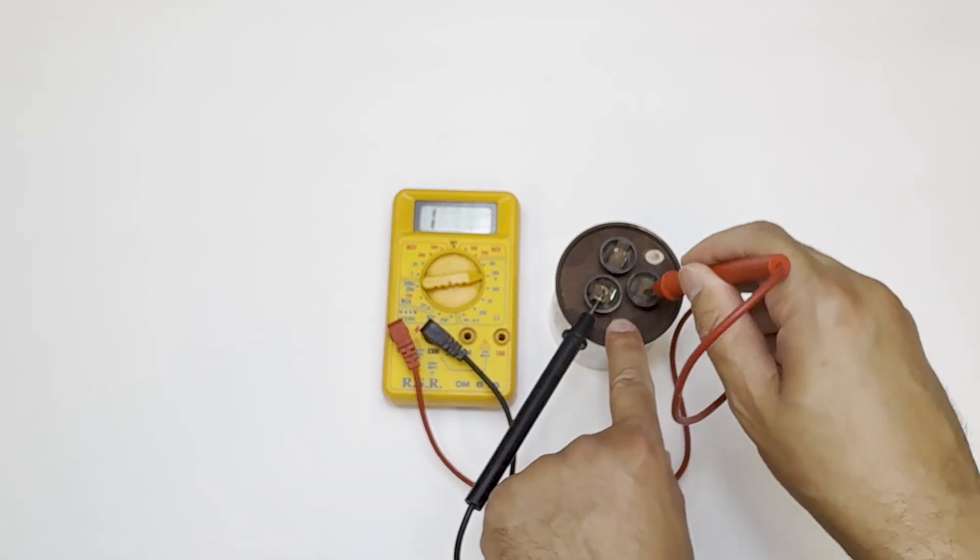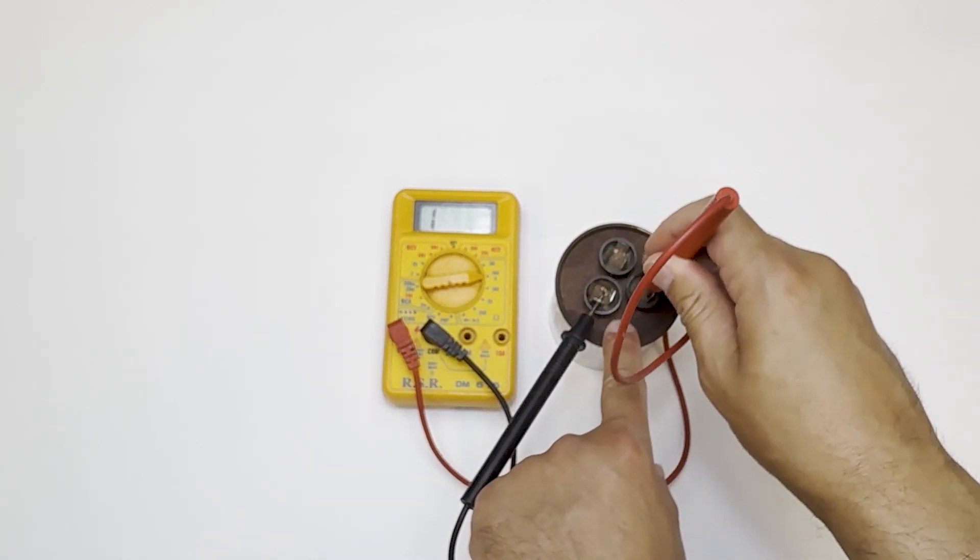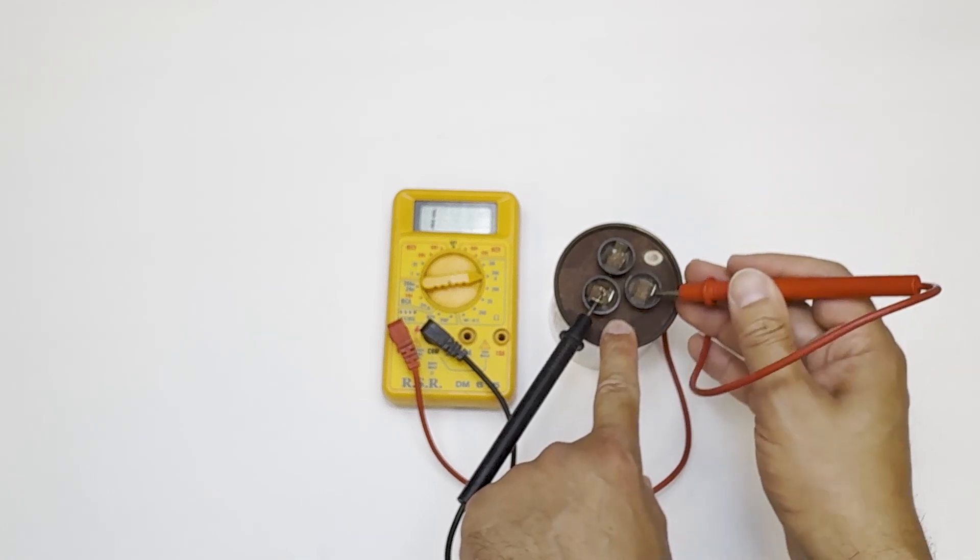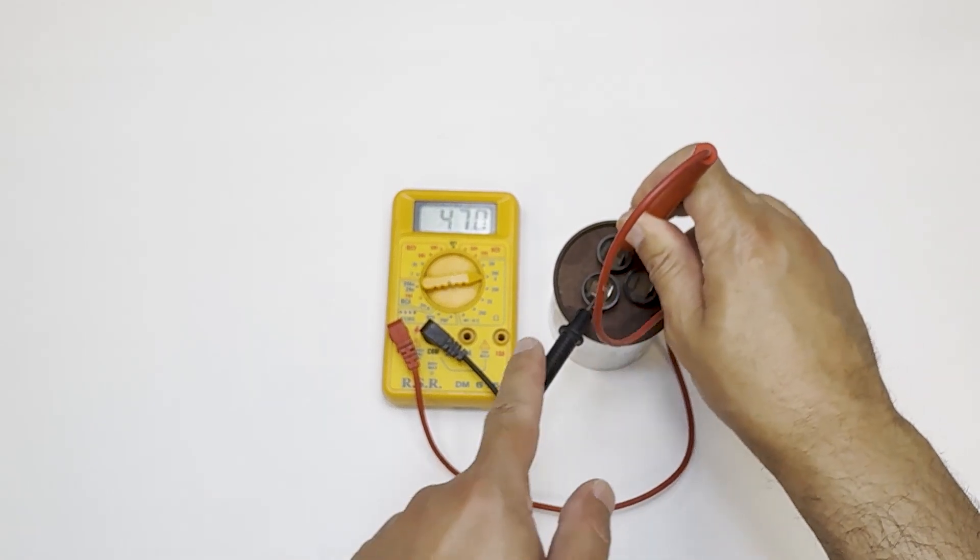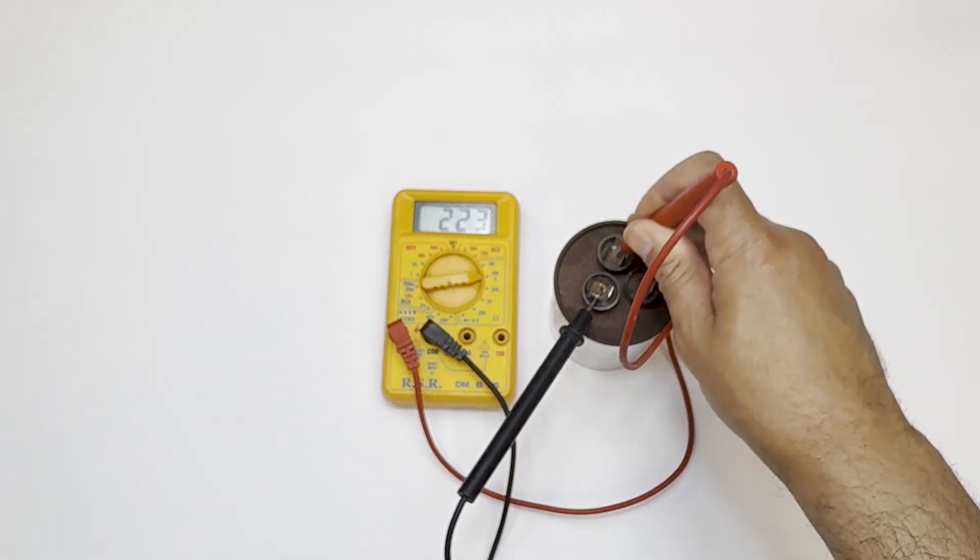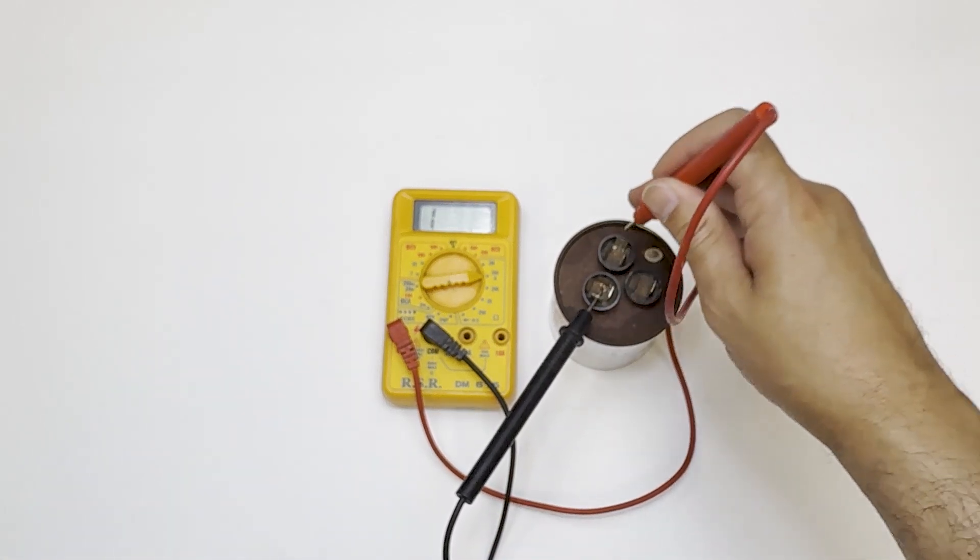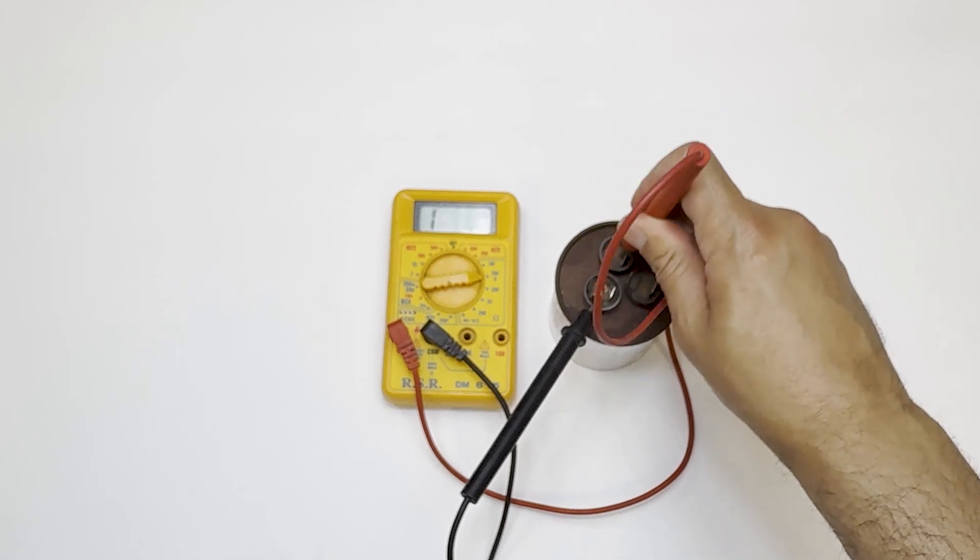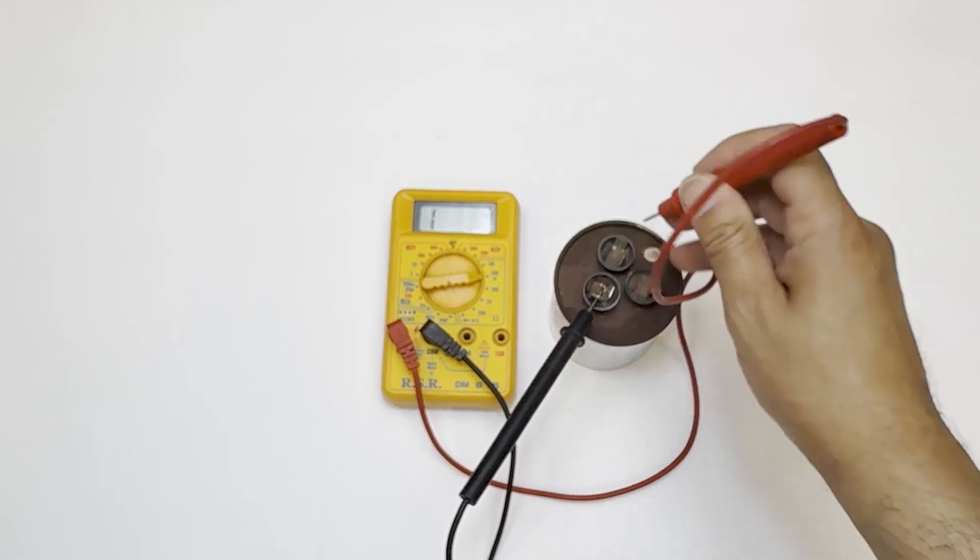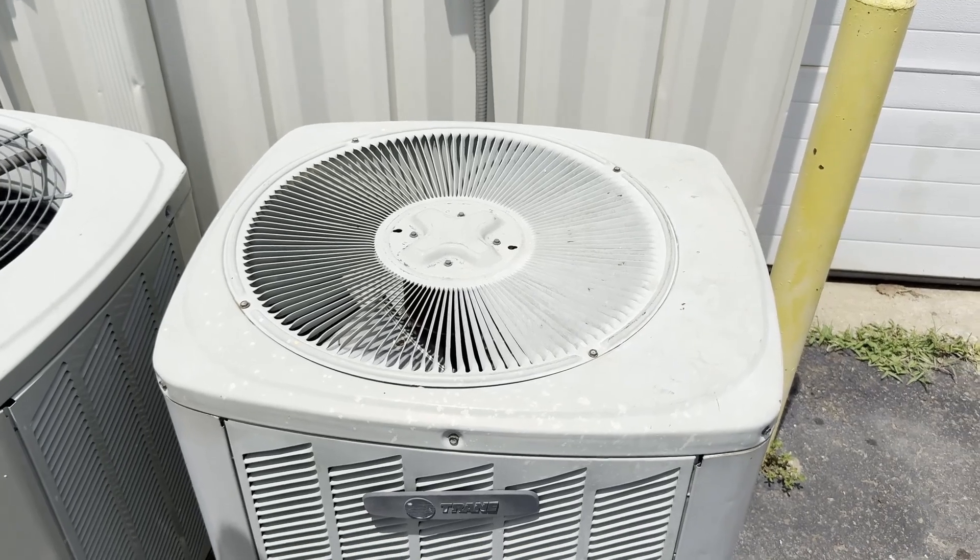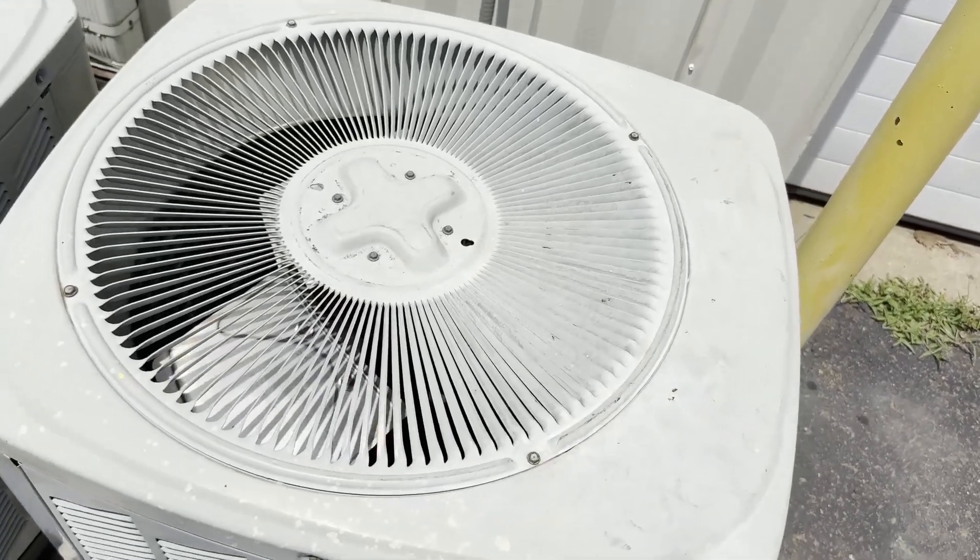Let's test the fan side first. And nothing. It stays at 1. The meter doesn't move at all, so that part of the capacitor is dead. Now let's try the herm side. You'll see the meter jumps and climbs, then eventually drops back. So the compressor side still kind of works, but since one side is shot, the whole capacitor is basically useless. Based on this and the sound we heard earlier, the compressor running and the fan not running, we know that the fan side of the capacitor is dead.